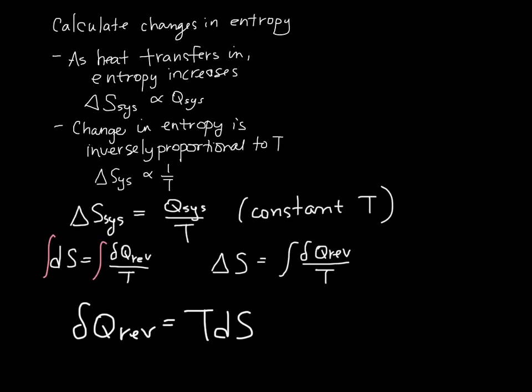So let's look at an example of how we can use this idea that entropy change is related to the amount of heat transferred divided by the temperature. So let's just rewrite that expression. We're going to consider a constant temperature example.